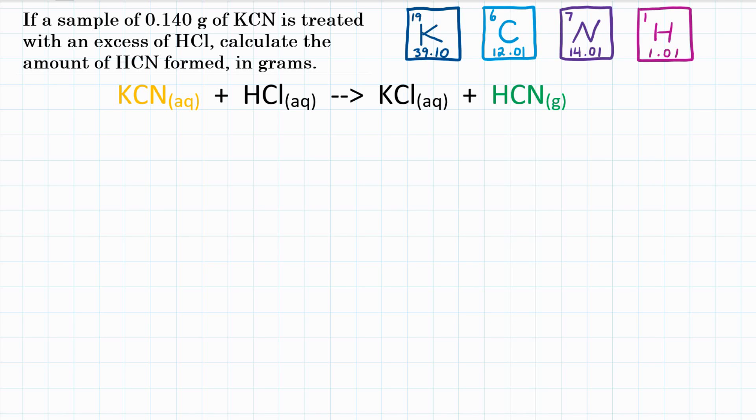Alright everyone, if a sample of 0.140 grams of KCN, potassium cyanide, is treated with an excess of HCl, hydrochloric acid, calculate the amount of HCN, or hydrogen cyanide, formed in grams.